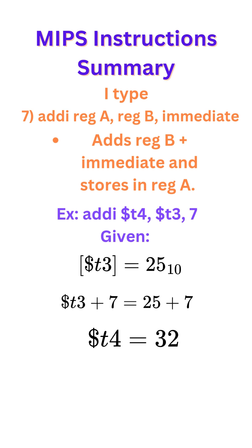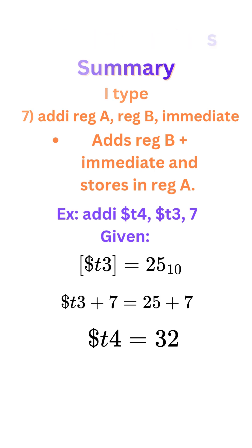Example: addi T4, T3, 7. We're given the content of T3, which is 25, and so in T4 we would have 32 because 25 plus 7 gives us 32. Hope you liked it — follow for more.